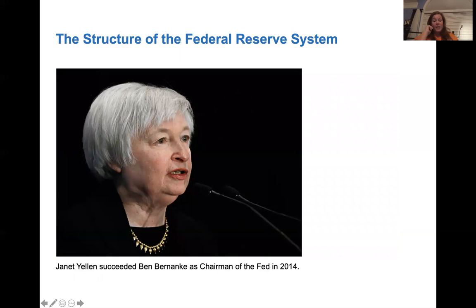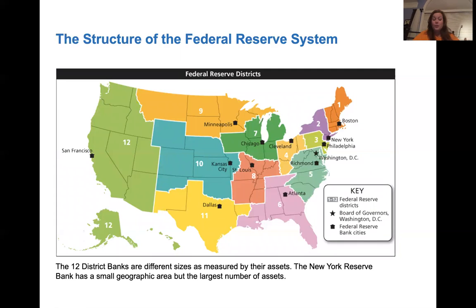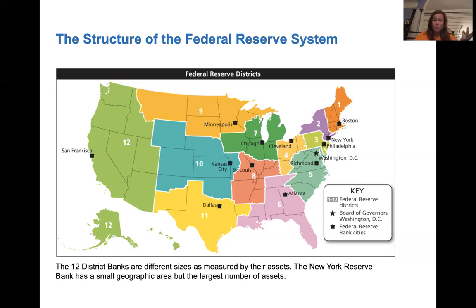Janet Yellen was the chairman of the Federal Reserve in 2014. Here's the structure of the Federal Reserve System showing the regions of the United States and where a Federal Reserve Bank is located for each region. The Board of Governors is in Washington, D.C. We've got our 12 different districts. The New York Reserve has the smallest geographic area but also contains the largest assets of the 12 banks.